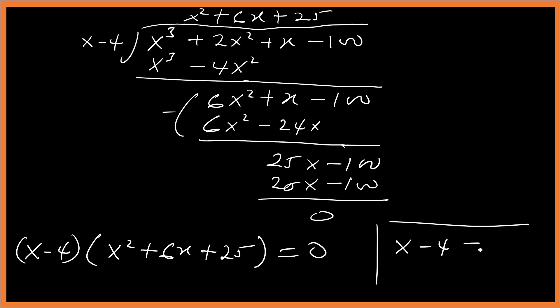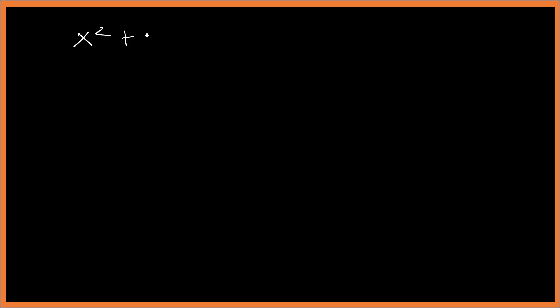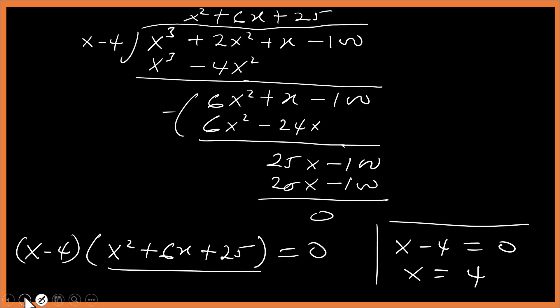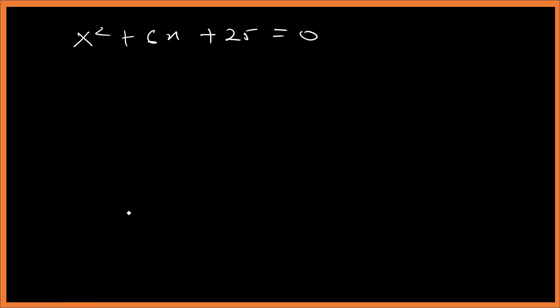Therefore we have the factorization: (x minus 4)(x squared plus 6x plus 25) equals zero. The first solution is x minus 4 equals zero, therefore x equals 4. Now let's solve x squared plus 6x plus 25 equals zero.